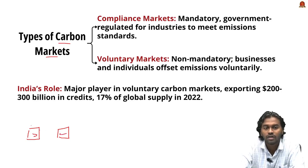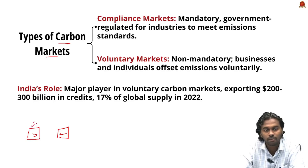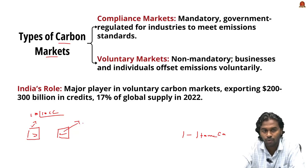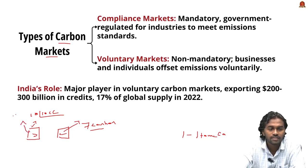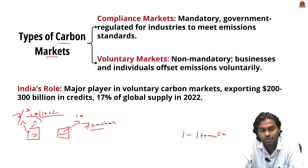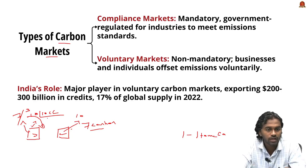To understand how carbon credits work, imagine two companies — a steel company and a cement company — both emitting carbon. The steel company has a cap of 10 carbon credits (10 tons of carbon) and the cement company has a cap of 7 metric tons. After production, the steel company emitted only 7 tons, leaving 3 unused credits, while the cement company exceeded its limit and produced 10 metric tons. To maintain balance, the cement company can purchase the remaining carbon credits from the steel company.